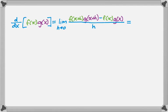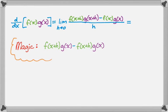Okay, so that's what we're going to do, but we're going to use some magic here, and the magic is this little fact: f of x plus h times g of x minus f of x plus h times g of x equals 0.